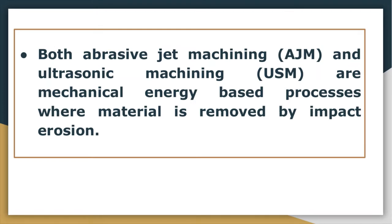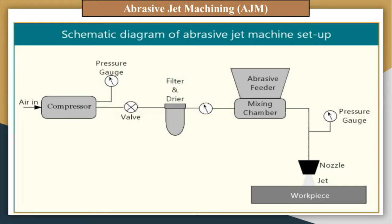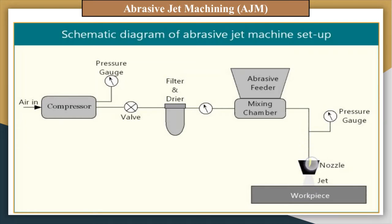As we know, both abrasive jet machining and ultrasonic machining processes are mechanically energy-based processes where metal is removed by erosion. Let us discuss the working principle of the abrasive jet machining process. Here I have shown a schematic diagram of the AJM process. In this abrasive jet machining process, hard abrasive particles are mixed with highly pressurized gas at a predefined mixing ratio, and the mixture is then allowed to come out through the nozzle in the form of a narrow jet. This nozzle converts the pressure energy of the mixture into kinetic energy and directs the high-velocity jet towards the workpiece.